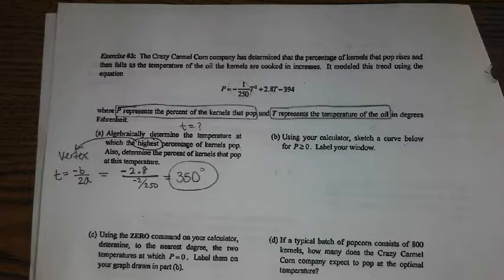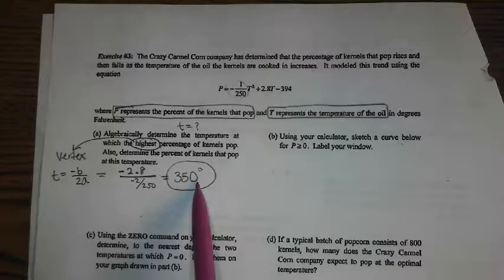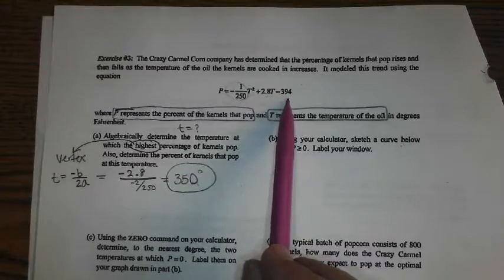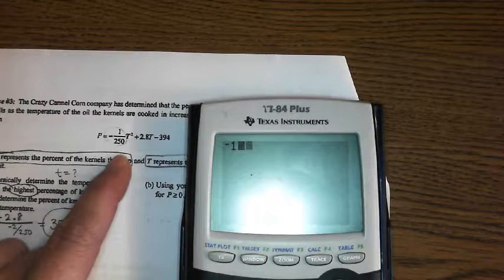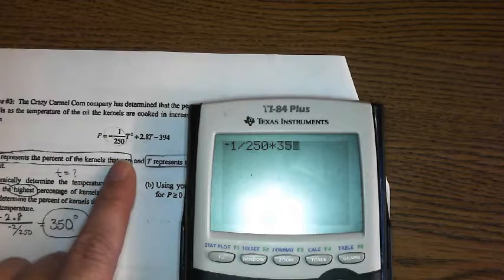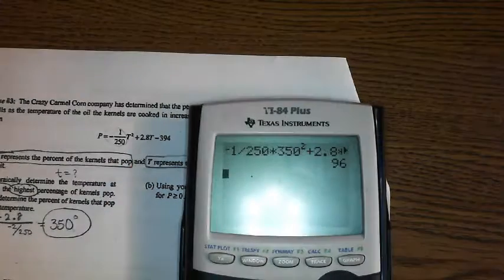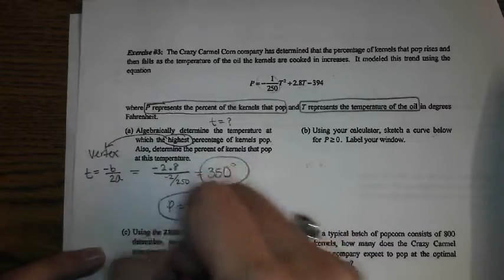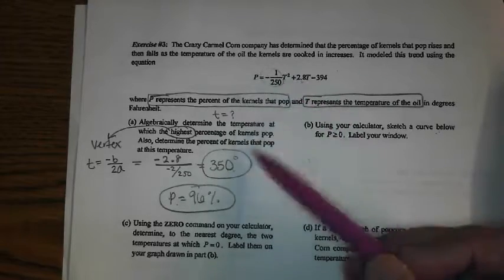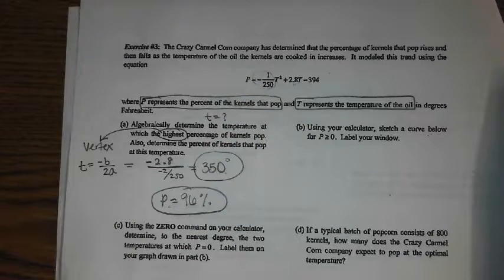Also, determine the percent that will be popped at this temperature. So, now that we know T, we just have to plug it in, right? So, if I take this formula, negative 1 over 250 times 350 squared plus 2.8 times 350 minus 394, 96%. You just plug it in, and you get 96%. So, that would be a point on this graph, by the way. T is 350, which makes the percentage 96%. Okay?